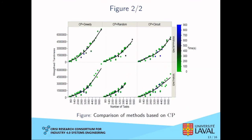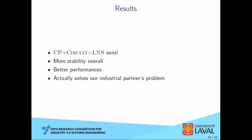For some reason, LNS seems to work better with CP plus greedy and CP plus circuit. My guess is that since we have a good initial circuit, it's easier to fix a few tasks than trying to correct a poorly made initial circuit. So overall, the best approach for our problem is CP plus circuit plus LNS.